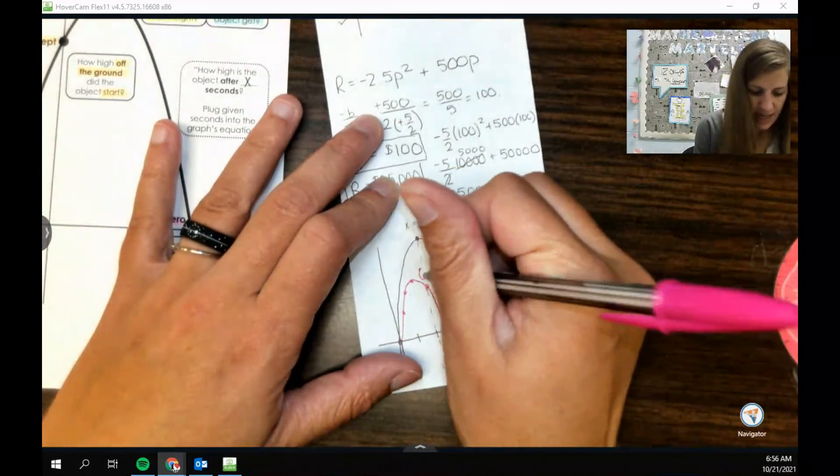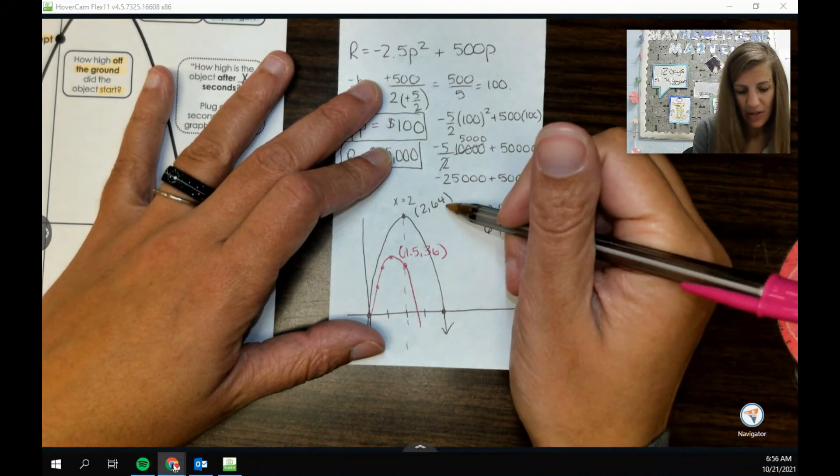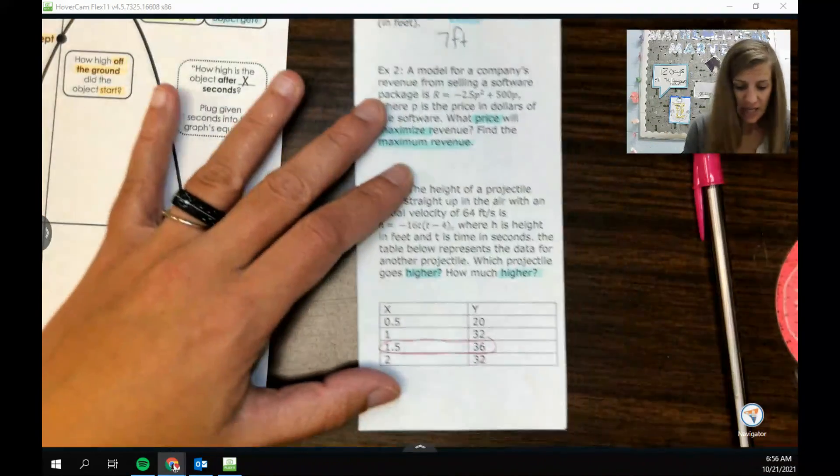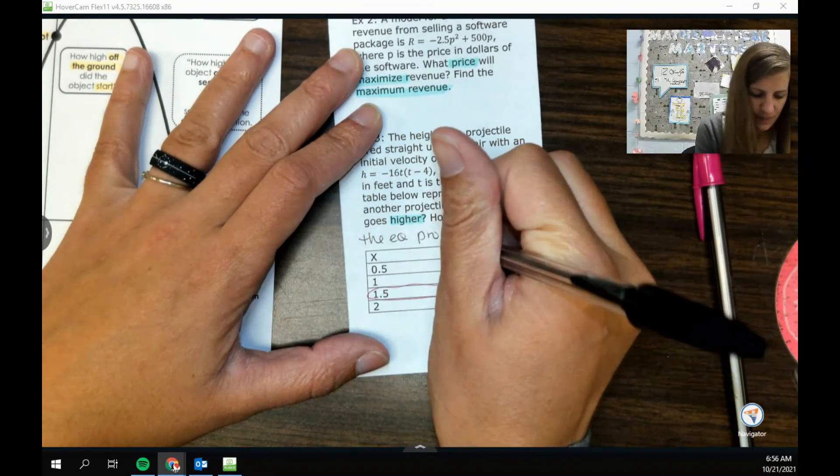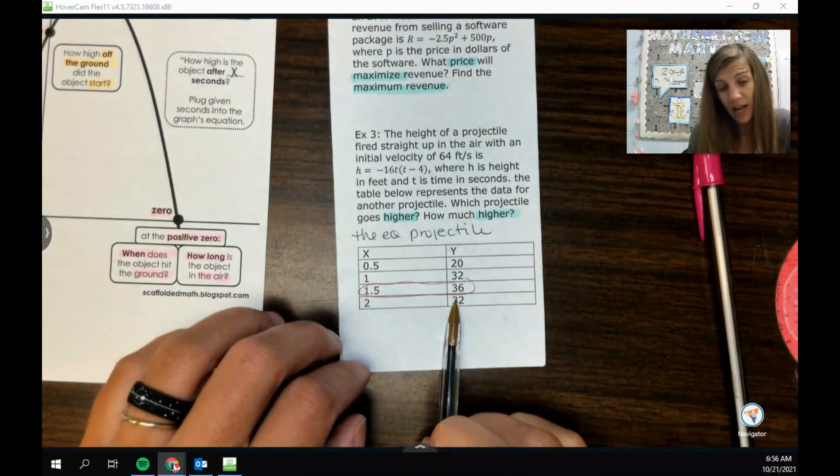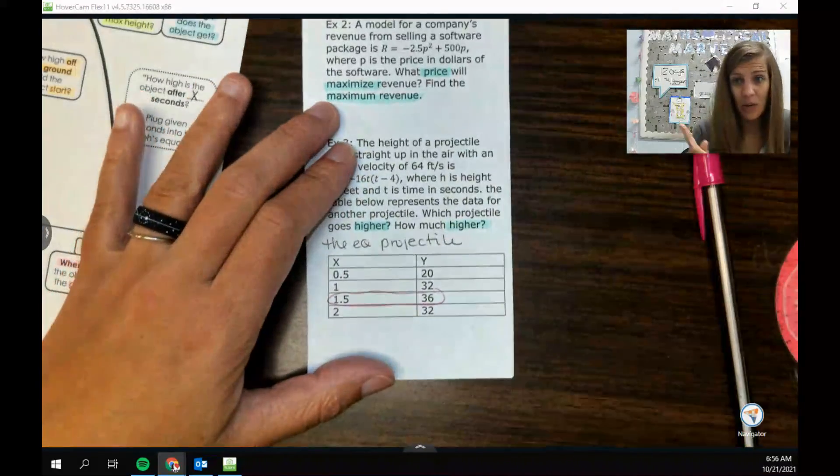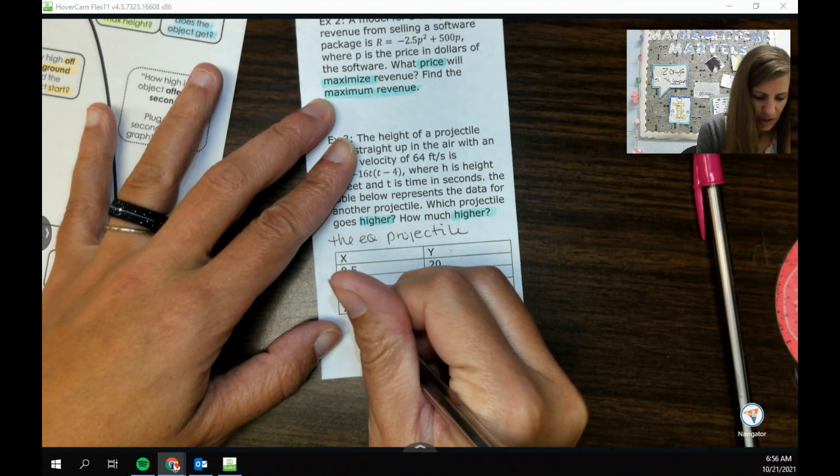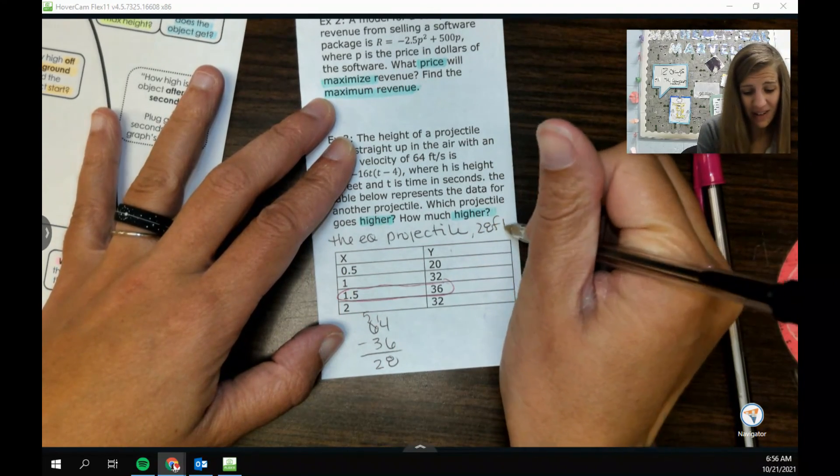So like yeah, this parabola is definitely shorter. Sort of, it reached its maximum at 1.5 comma 36. And so I can tell that the equation projectile went higher, specifically 64 feet. So which projectile goes higher? The equation projectile. And like how much higher? Well this one got only 36 feet high versus the other one that got 64. And I feel like if I want to know how much higher I want to subtract, it's like 64 minus 36. Just going to do some little style subtraction right here, 28 feet higher, that's a lot.